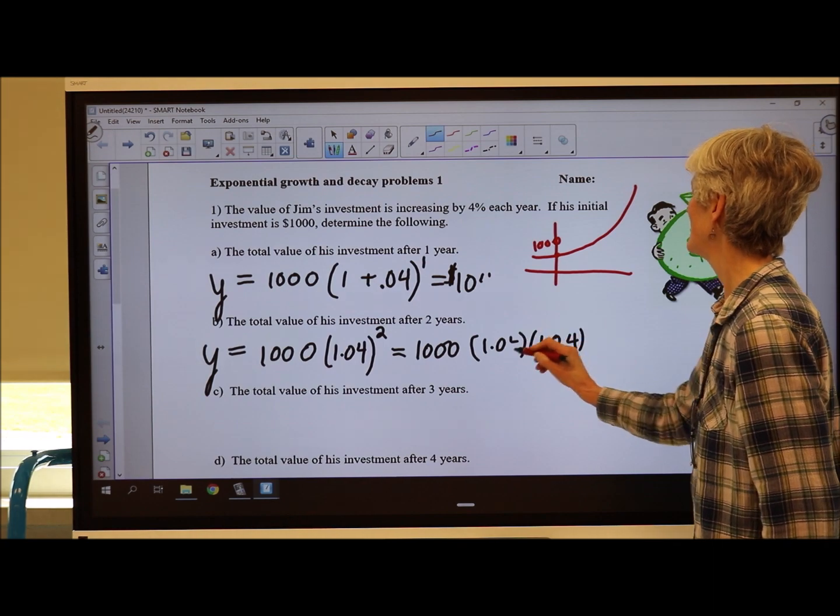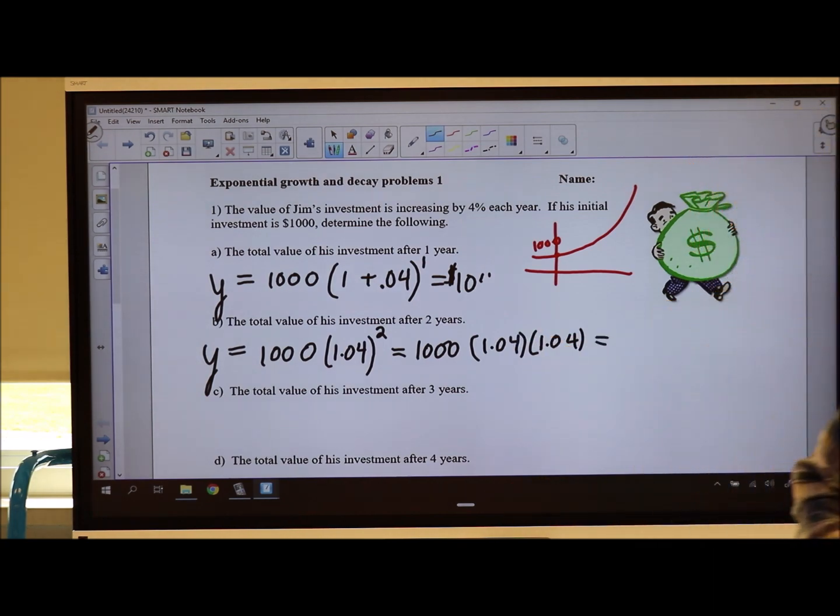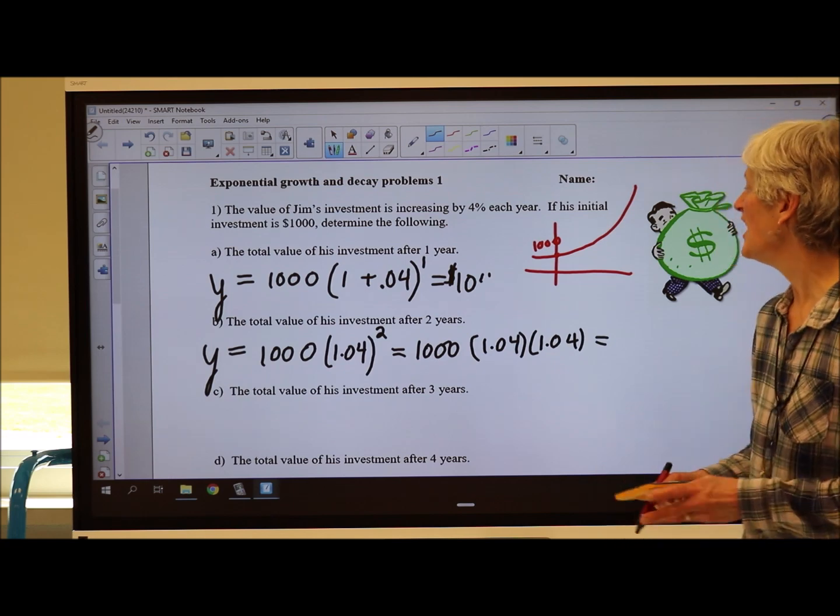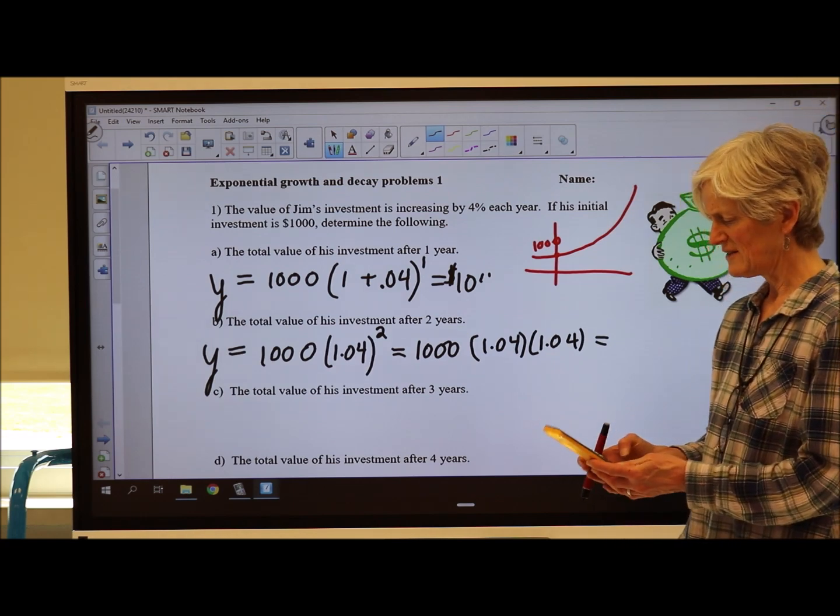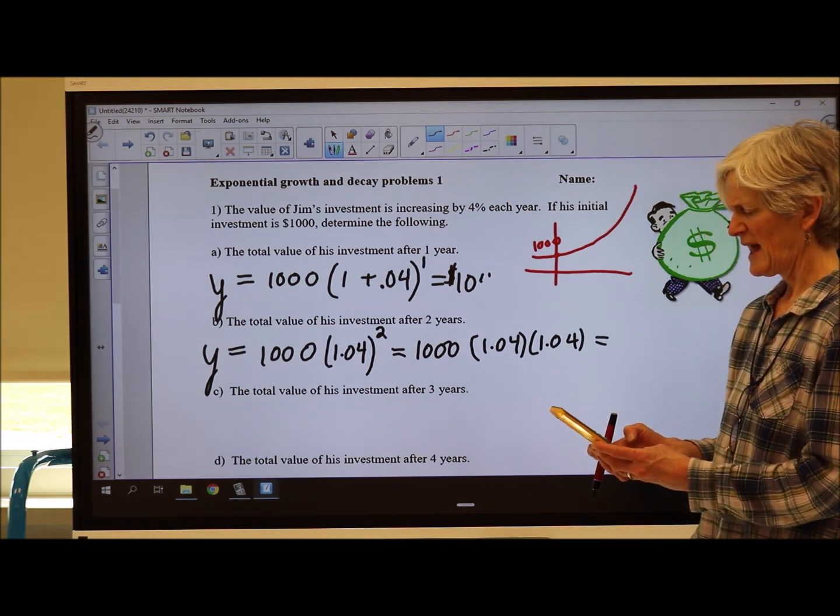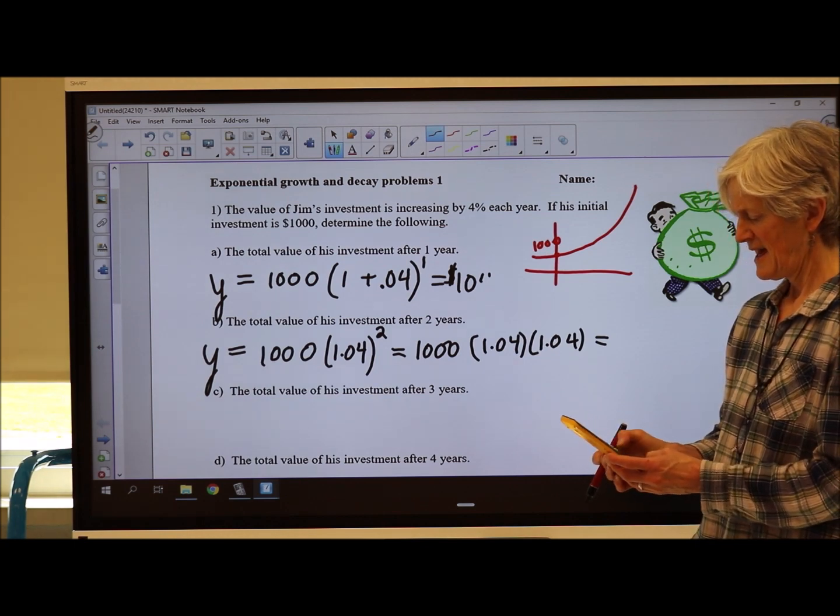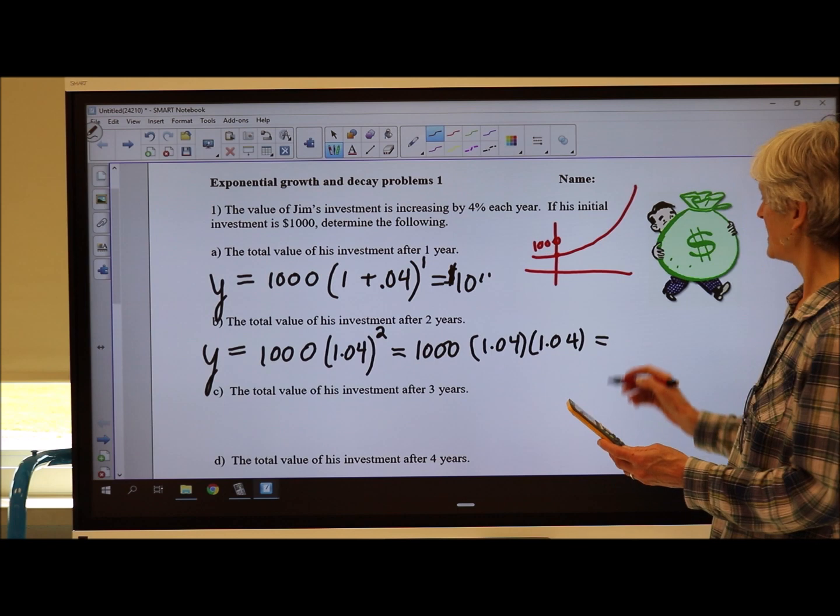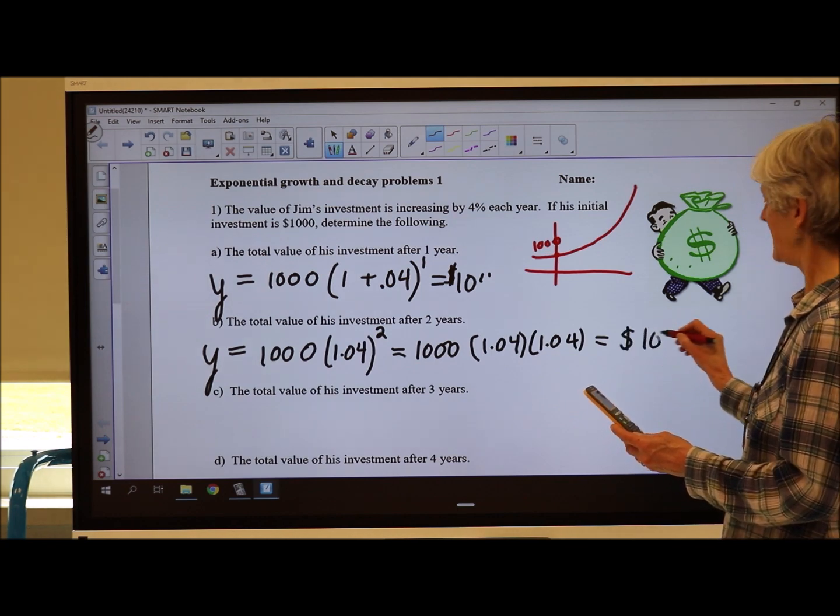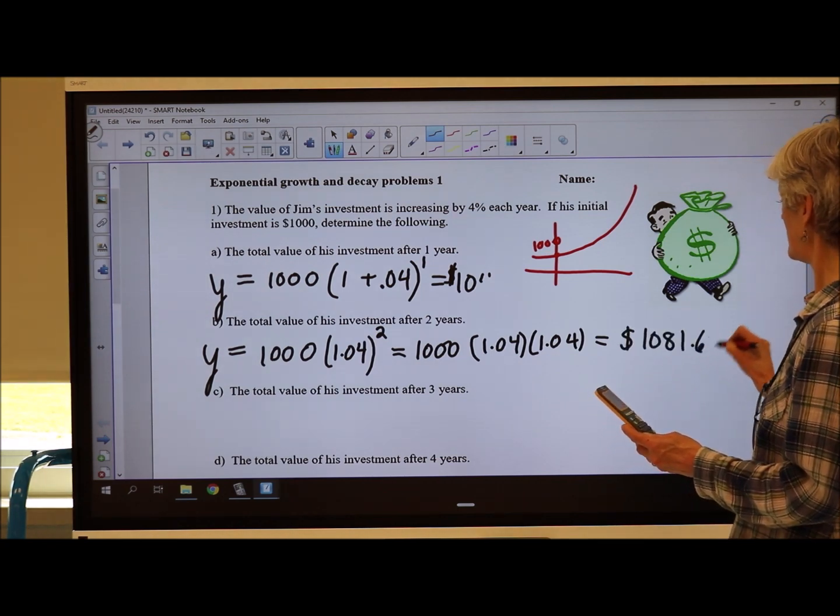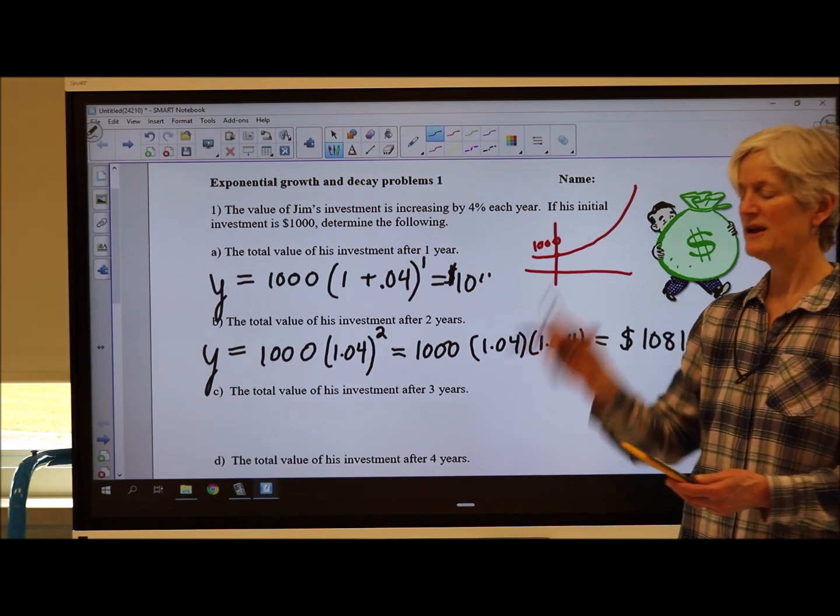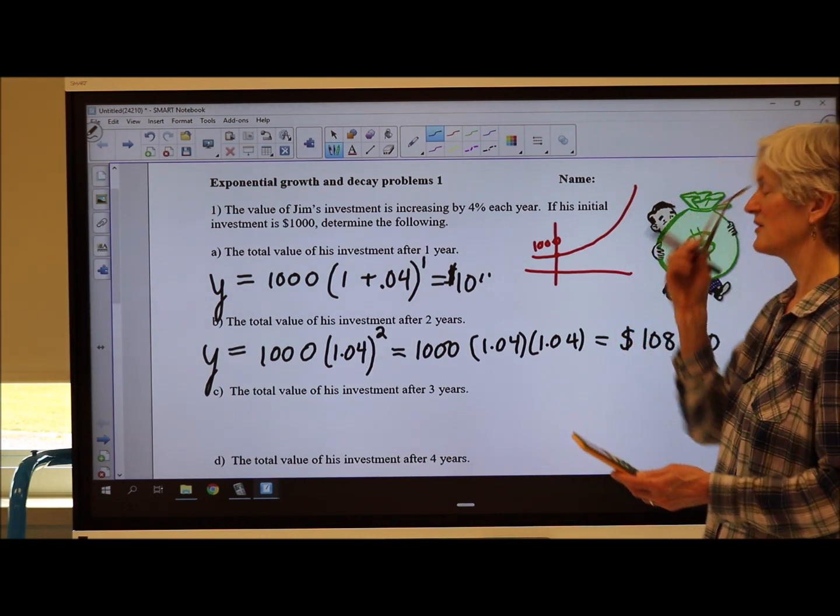You're taking, you're multiplying this by 104% twice. But I'm just going to go ahead and put it in my calculator. And that's going to give me $1,081.60. Reading glasses out. Yes, that looks reasonable.